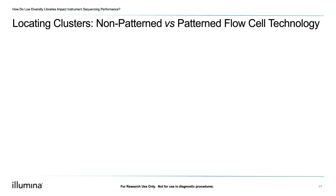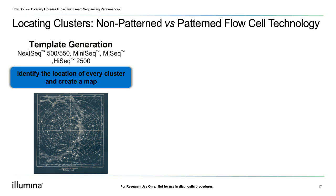Before we dive deeper into each metric, let's briefly discuss the difference between pattern and non-pattern flow cells. For non-pattern flow cells, such as those used on the NextSeq 500 and 550, MiniSeq, MiSeq, and the HiSeq 2500 instruments, clusters will be randomly distributed across the flow cell surface. Because clusters are generated randomly, the instrument does not know where they will be located, and will use the first few cycles to map the location of the clusters. This process is called template generation, which is similar to mapping stars using an algorithm like those used to generate star charts in astronomy.